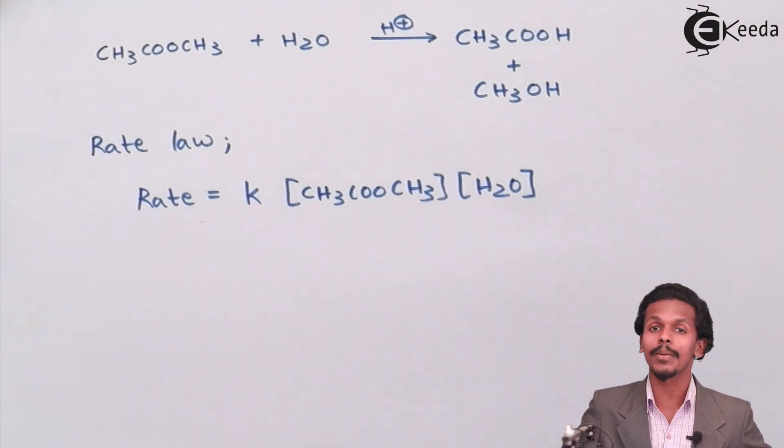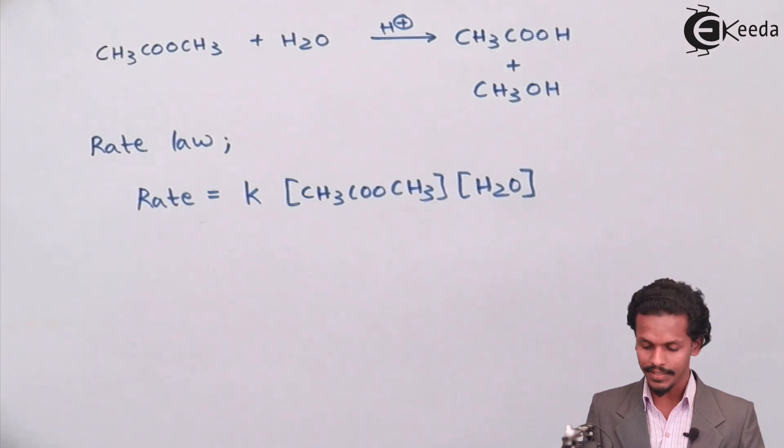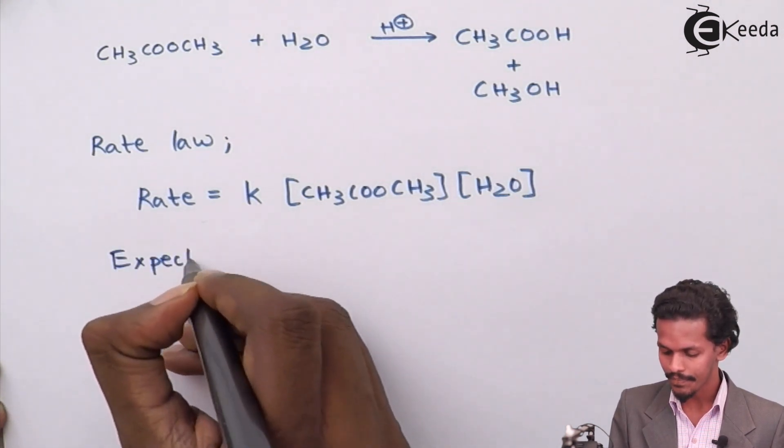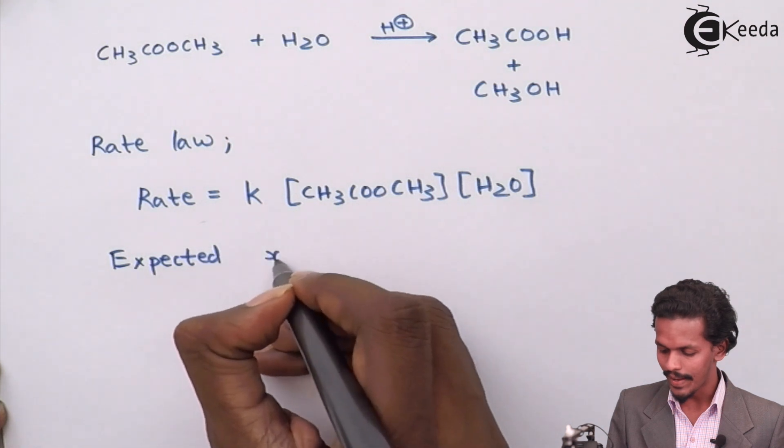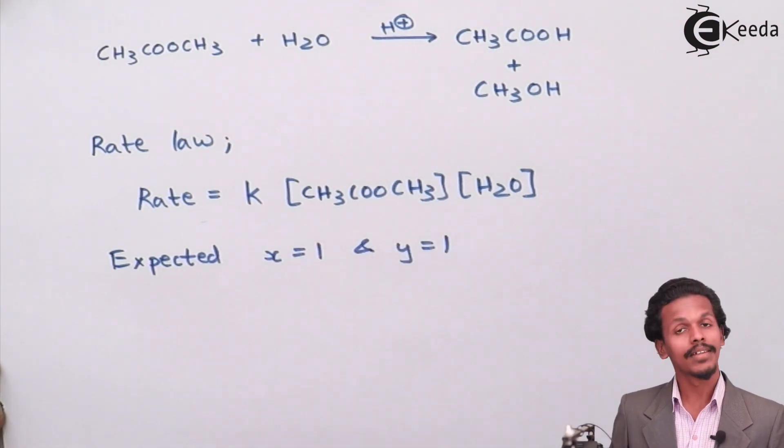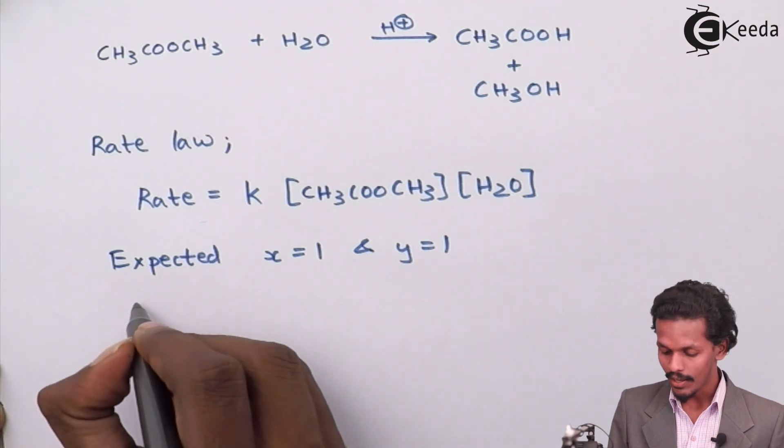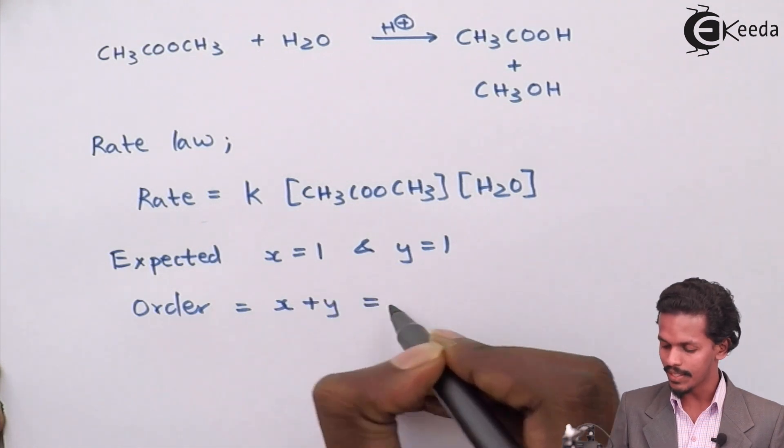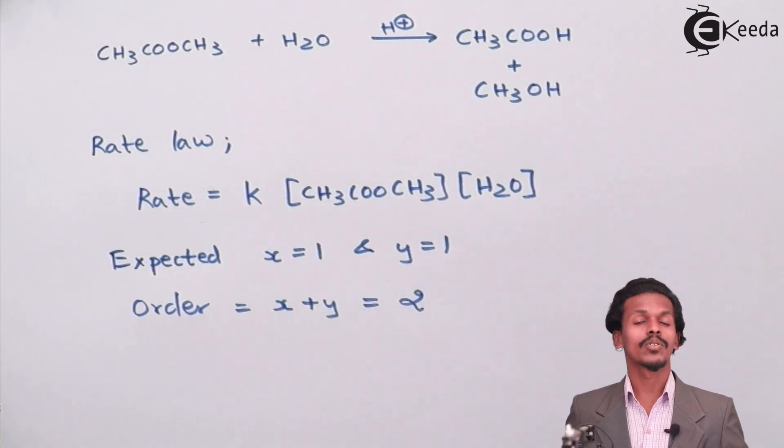By looking at this reaction or this rate law, we could determine that the value of x and y, the expected value of x and y is 1, which makes the order of reaction to be x plus y, which is nothing but 2. So the expected order of reaction is 2.